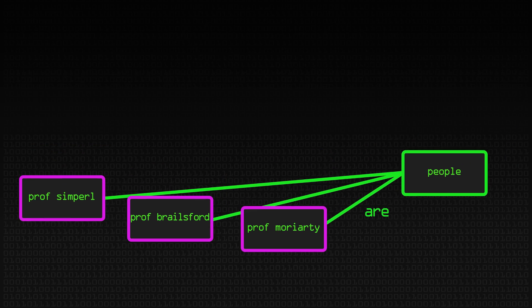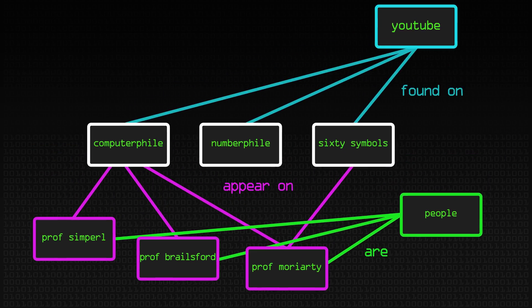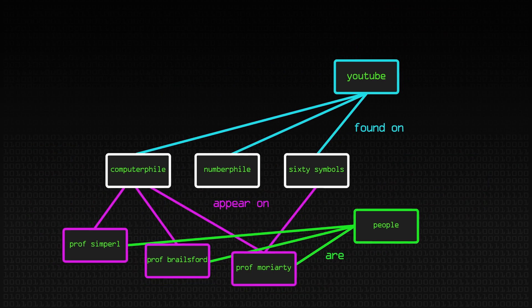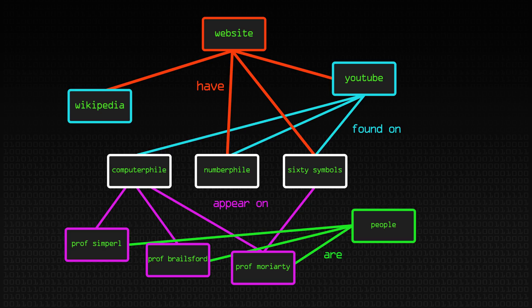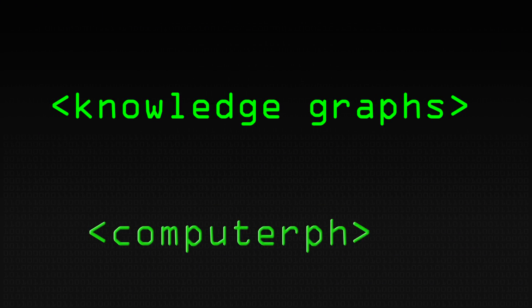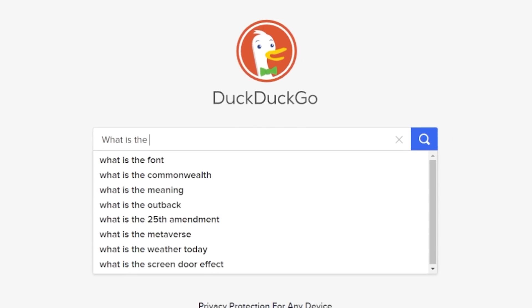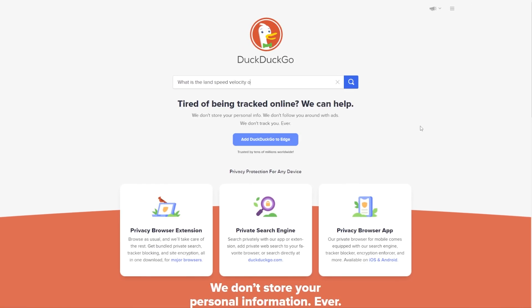We're going to talk about knowledge graphs. Knowledge graphs are an AI technology used pretty much anywhere online — in any major platform, system, or application that we use on a daily basis. Any time you ask Google, Bing, or your favorite search engine a question, it will most likely use a knowledge graph alongside many other types of techniques to retrieve information and answer questions.